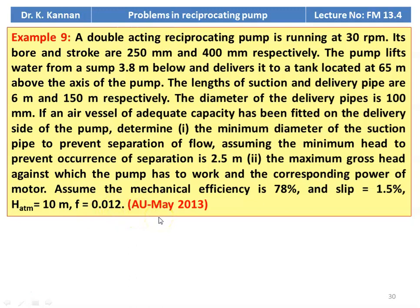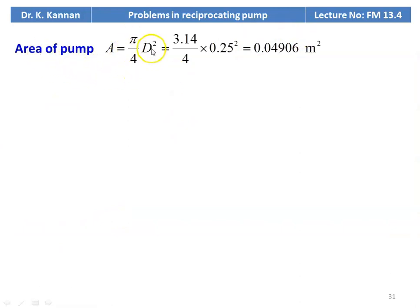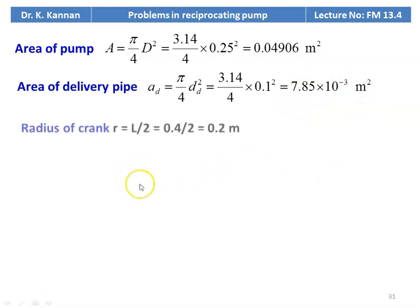This is from May 2013 question paper. Given data: double acting pump, speed = 30 RPM, D = 0.25 m, stroke L = 0.4 m, Hs = 3.8 m, Hd = 65 m, Ls = 6 m, Ld = 150 m, Dd = 0.1 m, separation head = 2.5 m, mechanical efficiency = 0.78, slip = 1.5%, friction coefficient = 0.012. Area of pump = π/4 × 0.25² = 0.04906 m². Area of delivery pipe AD = π/4 × 0.1² = 7.85 × 10⁻³ m². Radius of crank R = L/2 = 0.4/2 = 0.2 meter.